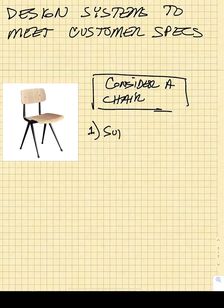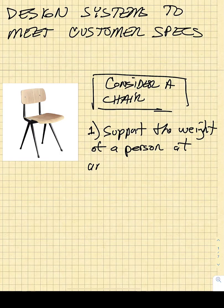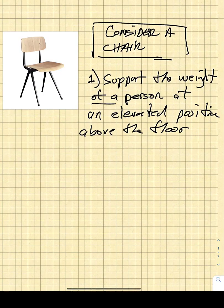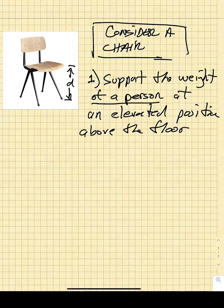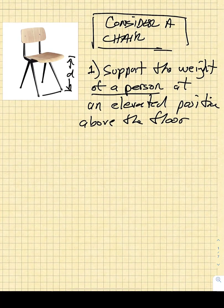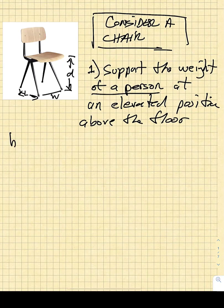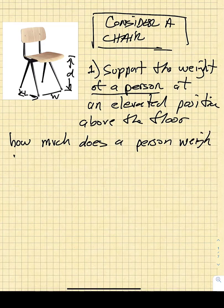A chair is designed to support the weight of a person at an elevated position above the floor. It's designed to support the weight of a person, but we haven't specified what the weight of a person is — the designer absolutely must do that. When you are doing design, you really have to think about how high above the floor do we want it to be. So there's a dimension there that's really important.